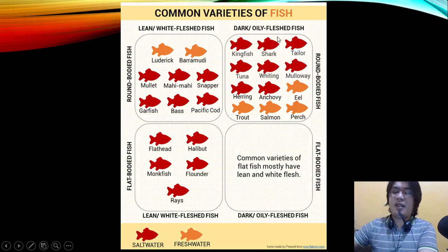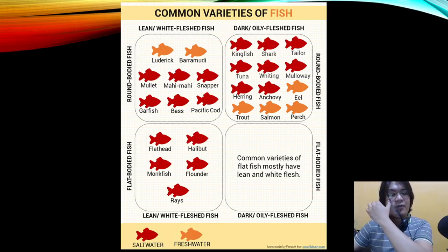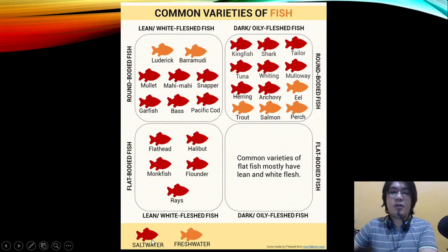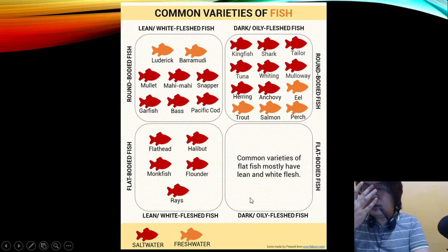Flathead, halibut, monkfish, flounder, and ray are flat-bodied fish with lean white flesh, all from saltwater sources. Common varieties of flat fish mostly have lean white flesh. Some flat-bodied fish that are dark oily flesh are generally not for consumption.